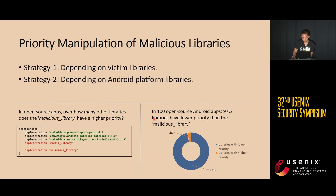Given these three rules, we found a way to elevate the priority of a malicious library. The first strategy depends on the consumer-first rule. For malicious libraries, the most straightforward way to elevate priority is to declare the victim library as its dependency. For the second strategy, we notice that apps often rely on a few Android platform libraries that are preset by Android Studio and are usually located at the very beginning of the dependencies list in the build.gradle. Thus, in practice, the platform libraries may have higher priority than other third-party libraries.